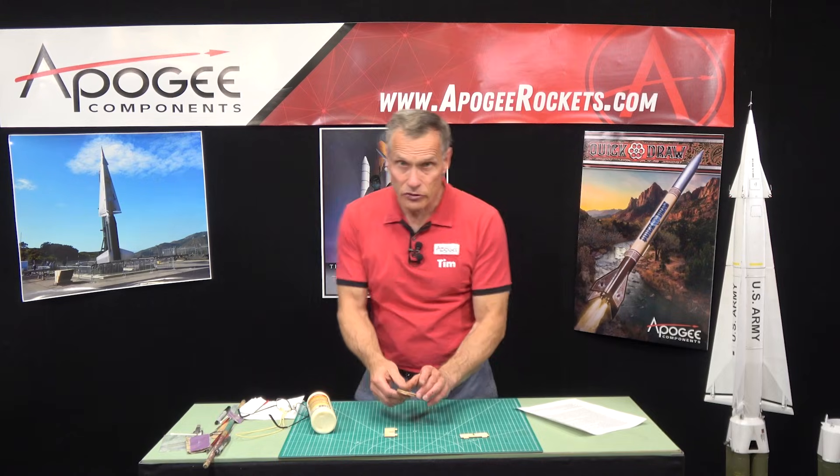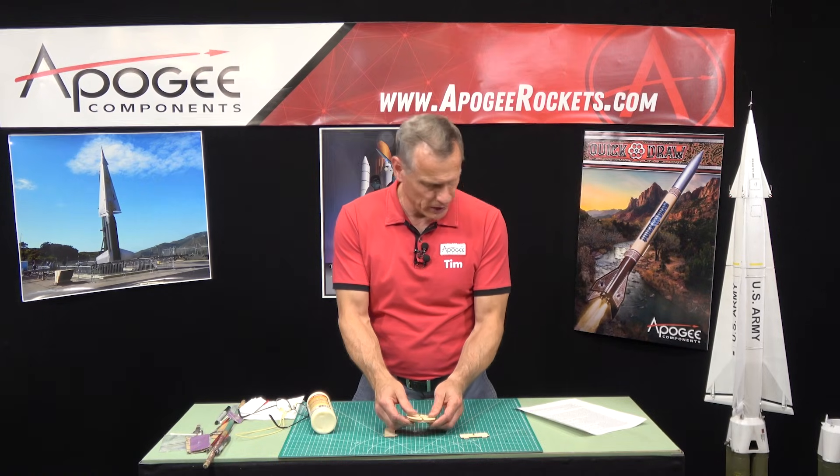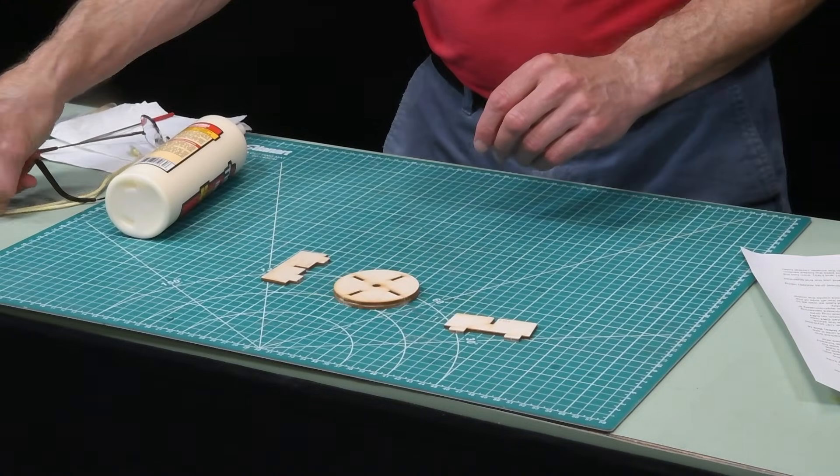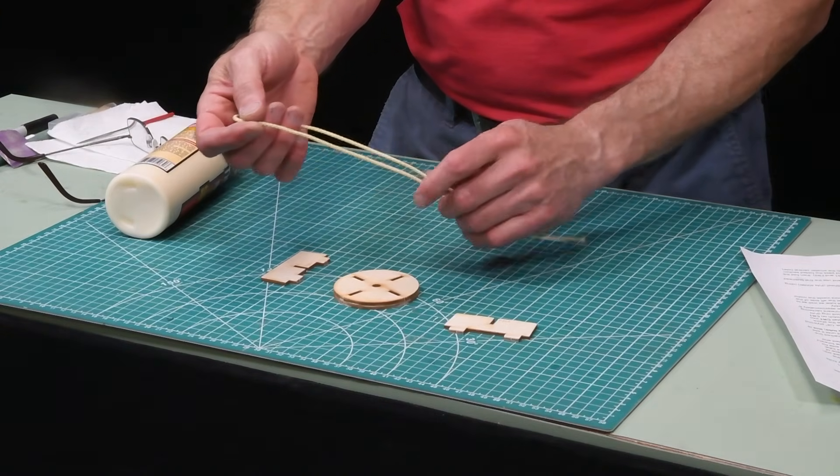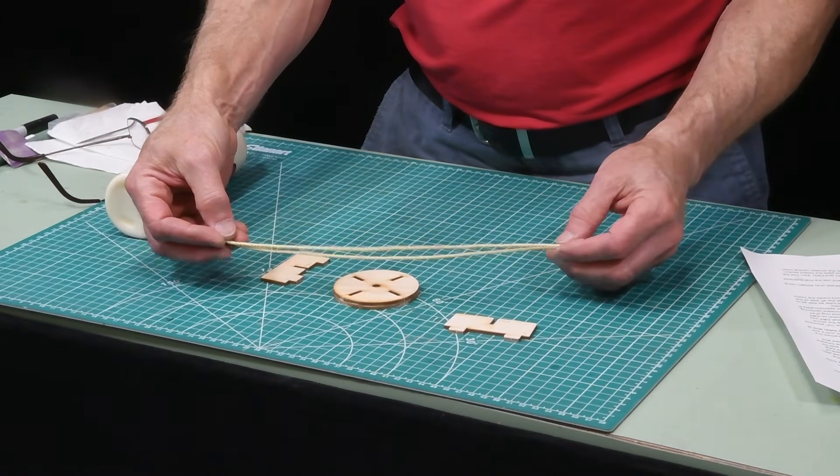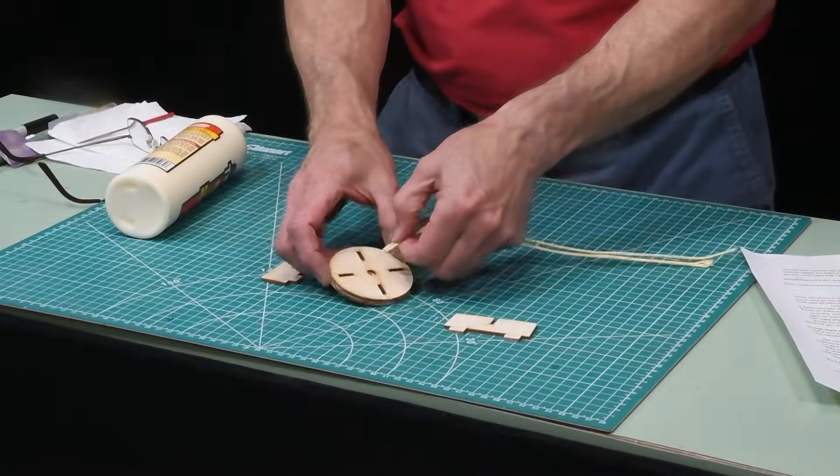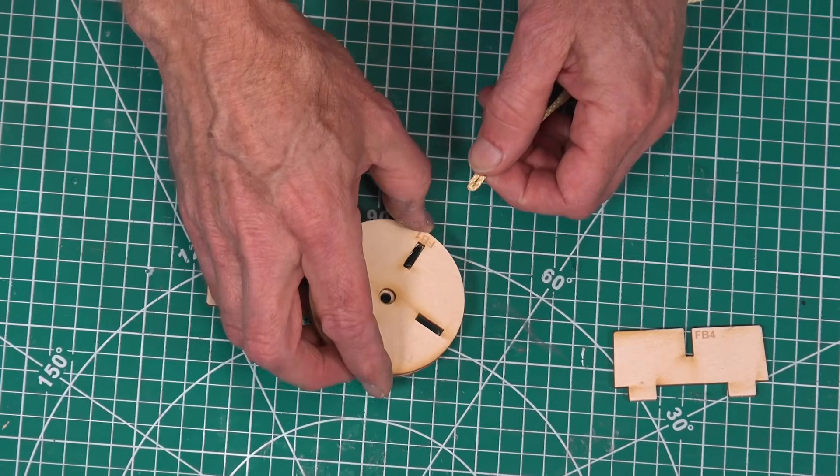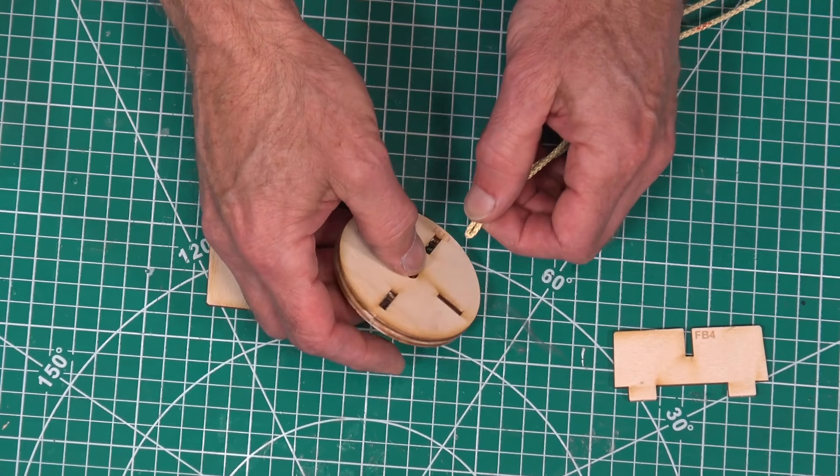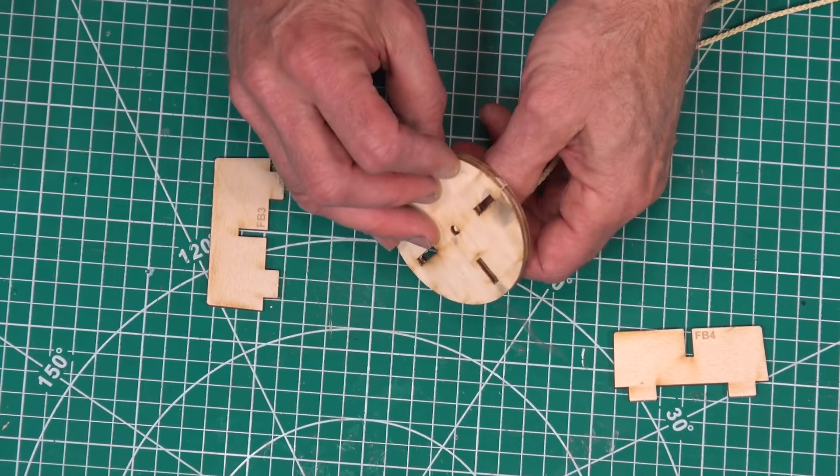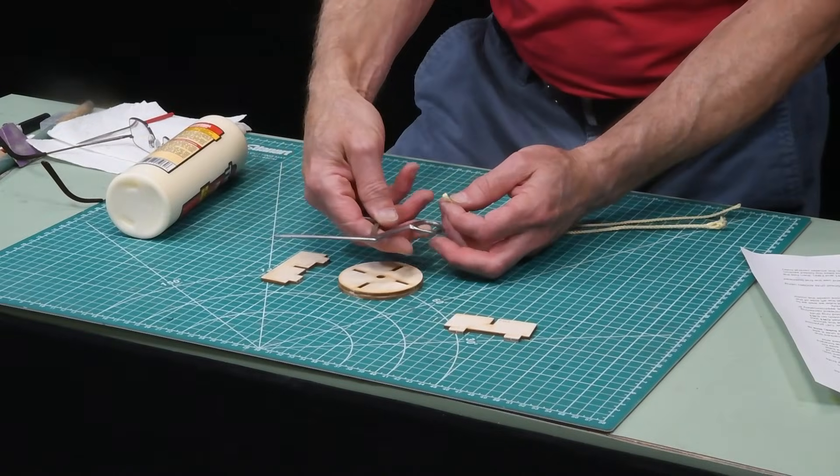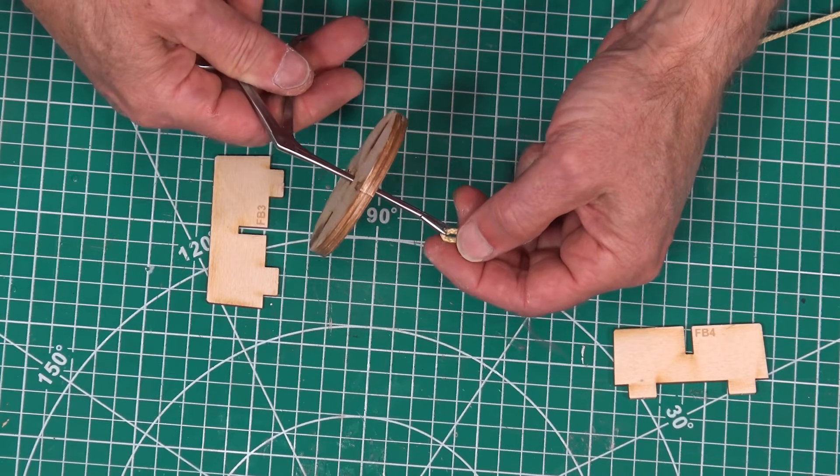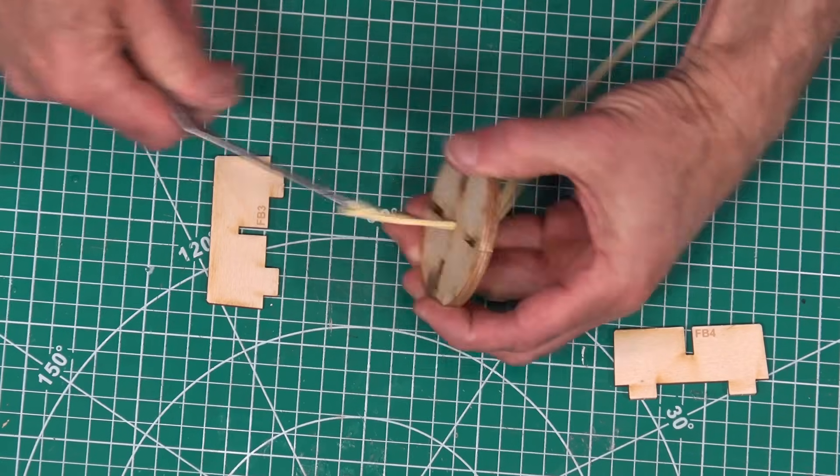When it's dry or good and tacky, we're going to take that 24 inch piece of Kevlar. This is step 101. We're going to fold it in half like this, and it's got to go through that hole. It's going to go through the larger hole first, then the smaller hole. You can either push it through. I've got this nifty little tool. I'm going to put that through the hole, just grab it, and pull it through.